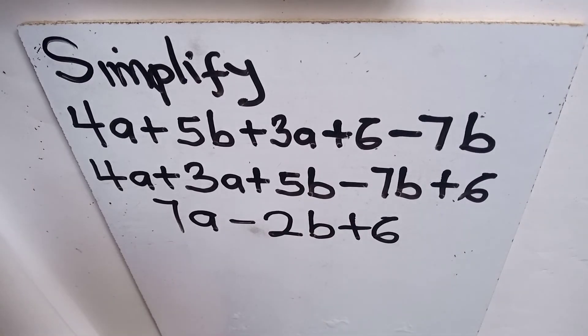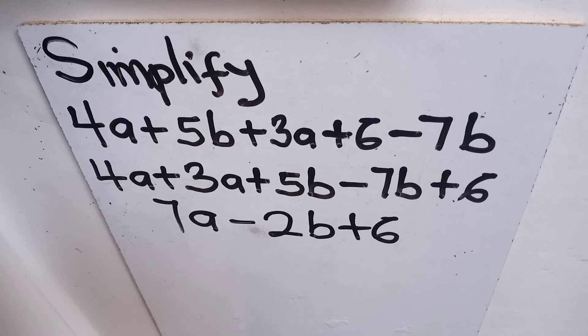So this becomes the simplest form of the algebraic expression 4a plus 5b plus 3a plus 6 minus 7b, which simplifies to 7a minus 2b plus 6.